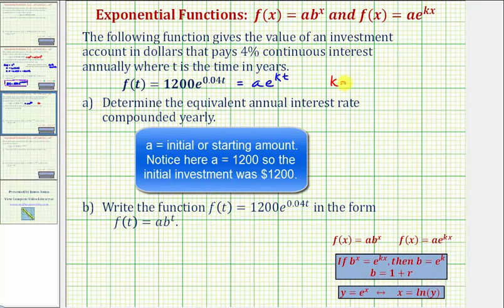Notice here k is equal to 0.04, which as a percent would be 4%, which again is a continuous interest rate.